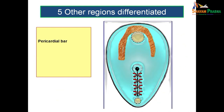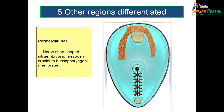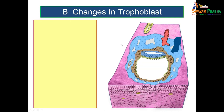One more region to mention is the pericardial bar. The pericardial bar is an inverted U-shaped intraembryonic mesoderm cranial to the buccopharyngeal membrane. When the mesoderm reaches the pre-cordal plate, it is not able to invaginate between the layers. So it goes cranially, winds around, and forms an inverted U-shaped loop known as the pericardial bar.